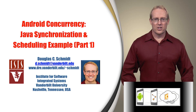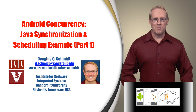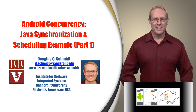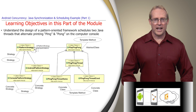Welcome to the next part of the module, which presents an example that shows how the Java concurrency mechanisms covered earlier can be used to synchronize and schedule the behavior of a multi-threaded program. This part analyzes the design of a pattern-oriented framework that's then customized and implemented in the next part to create two Java threads that alternate printing ping and pong on the computer console.